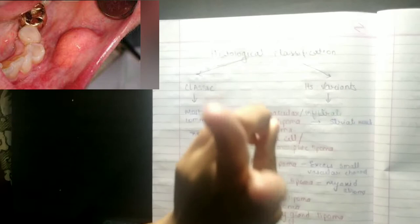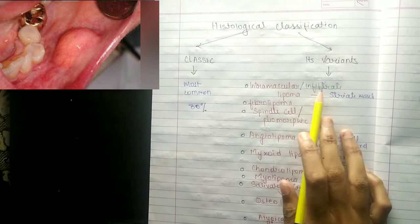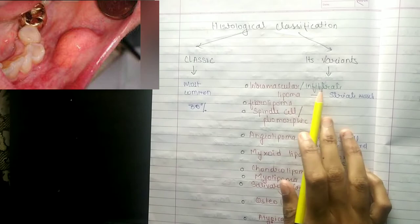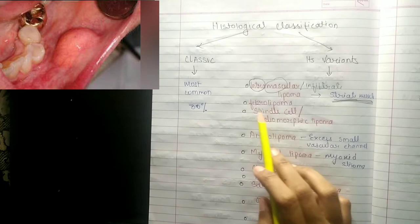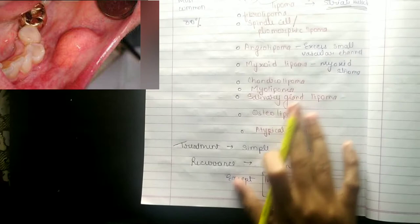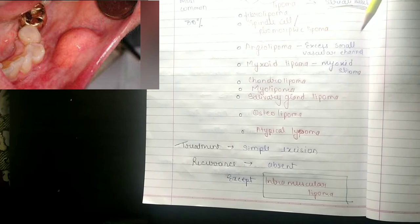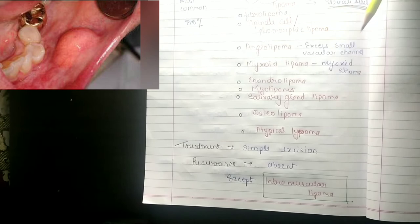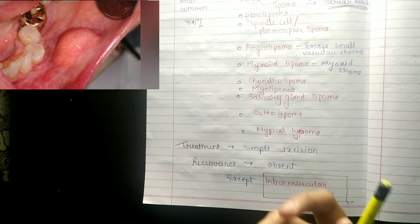There are histological types of lipoma. The first is classic lipoma with its variants, which include: intramuscular lipoma (infiltrating into muscles), spindle cell lipoma, pleomorphic lipoma, angiolipoma (with excessive small vascular channels), myxoid lipoma (with myxoid stroma), chondrolipoma, myolipoma, salivary gland lipoma, osteolipoma, and atypical lipoma. You can differentiate them from their names.